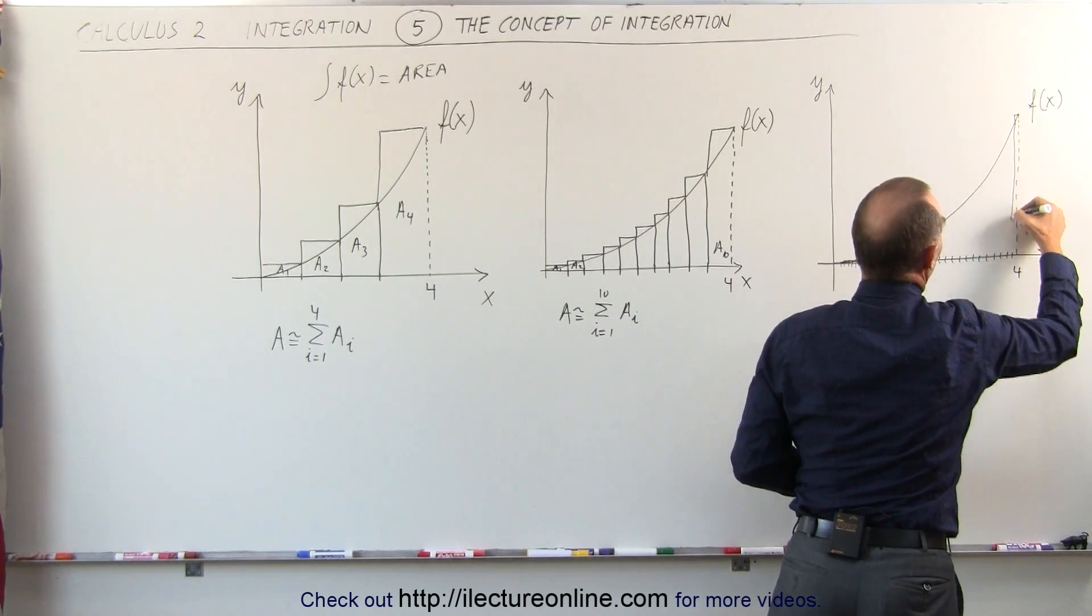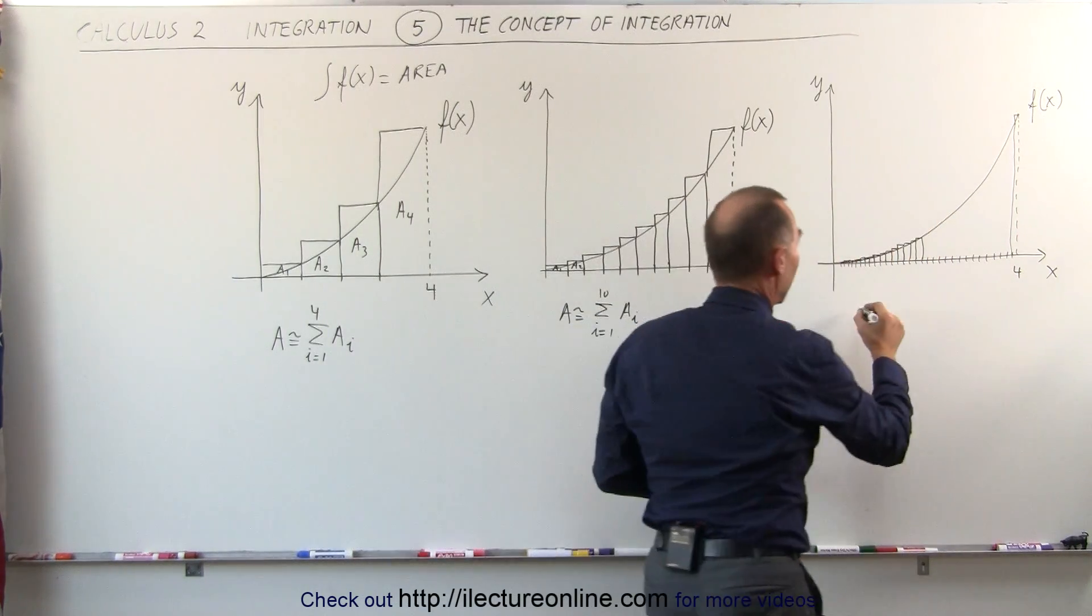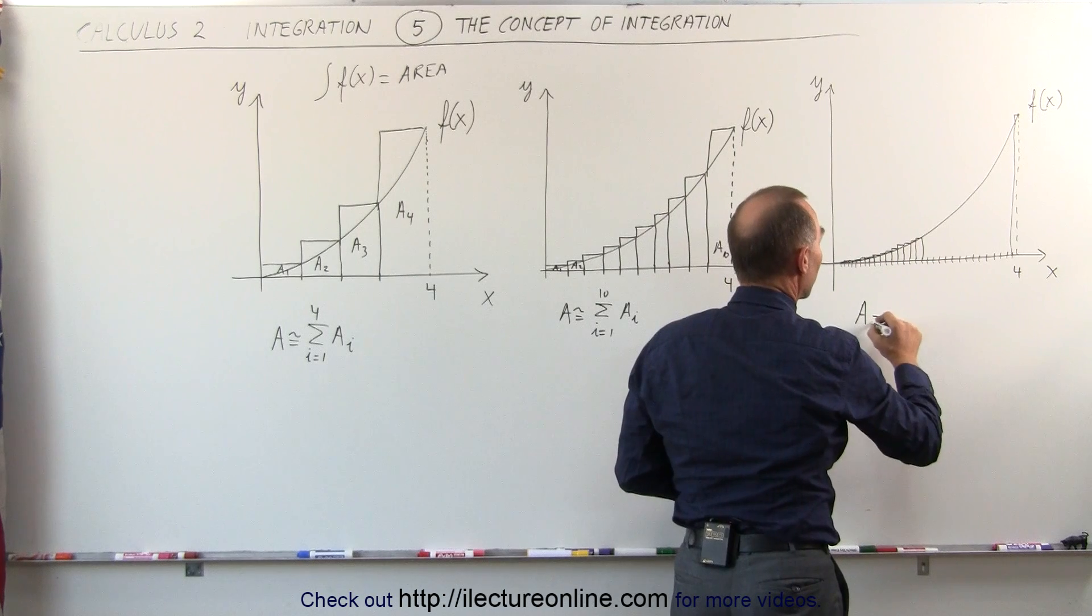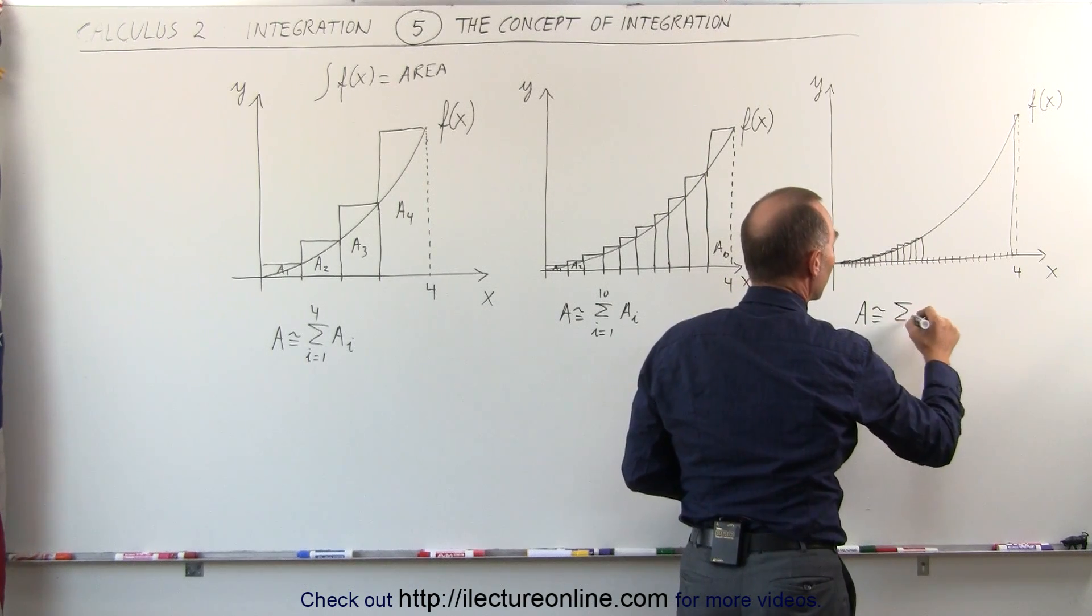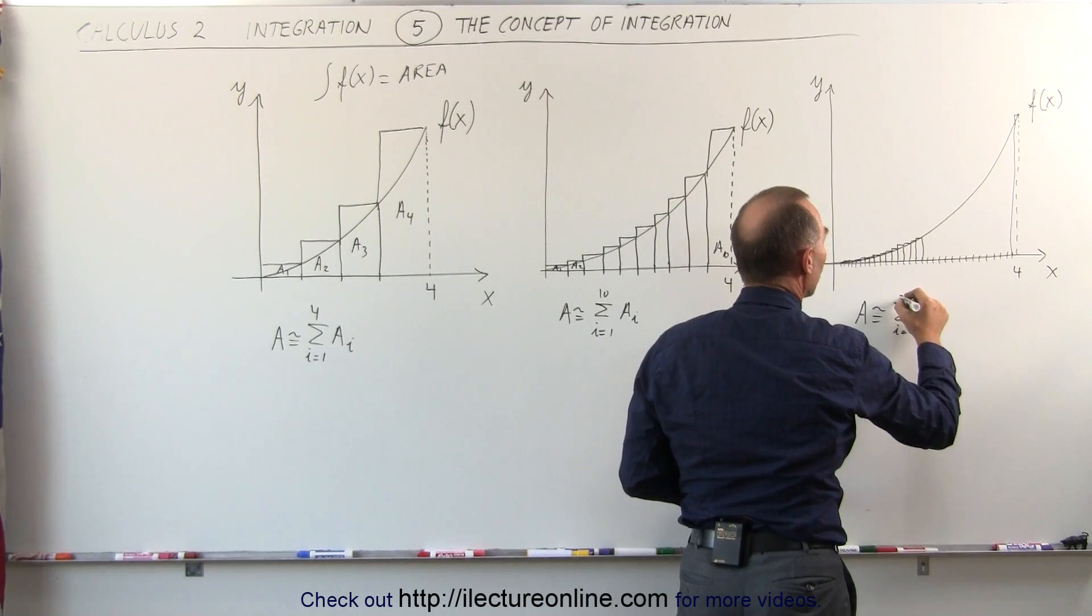This would be the area of the last section right there. You can see that when you add them all up, the area underneath the curve will be approximately equal to the sum of all the a sub i's, in this case, i going from 1 to 32.